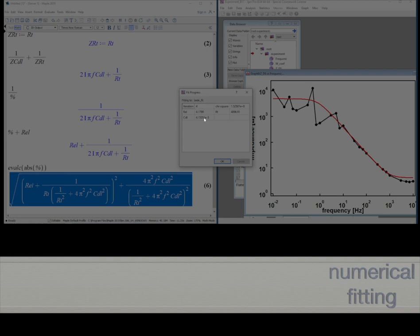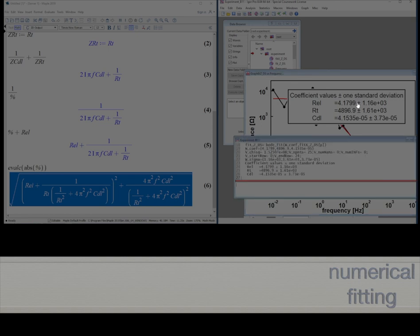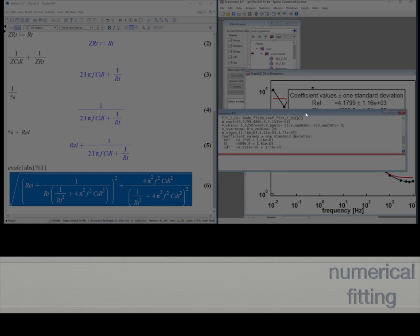Now, if you want to know how good your fit is, you can see it here. The double layer capacitance of 41 microfarad, you have an error of 37. The transfer resistivity is pretty good, and the electrolyte resistance 4 Ohms. It's okay, not so good, I guess.